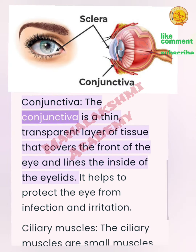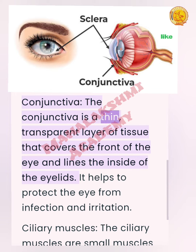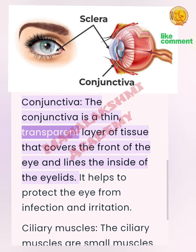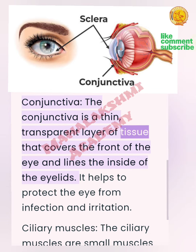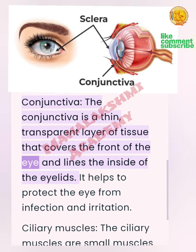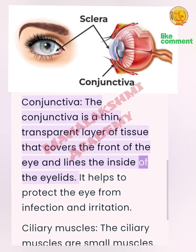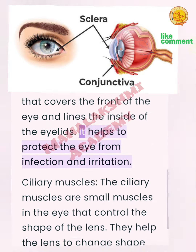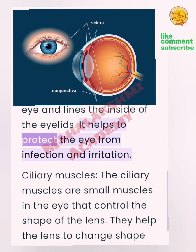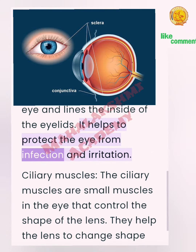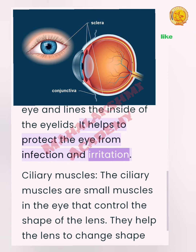Conjunctiva: The conjunctiva is a thin, transparent layer of tissue that covers the front of the eye and lines the inside of the eyelids. It helps to protect the eye from infection and irritation.